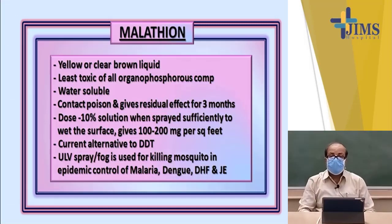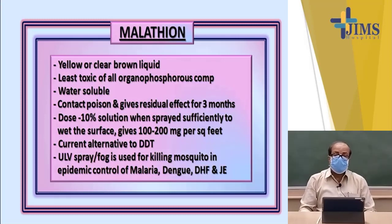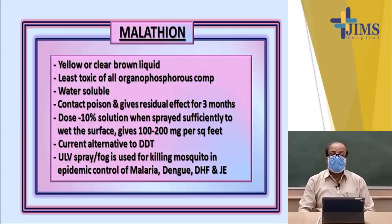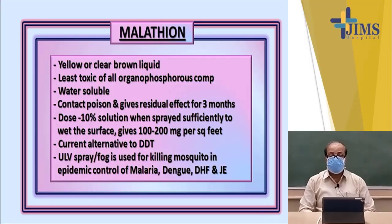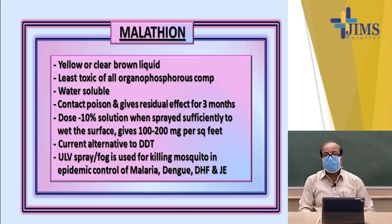Next is the organophosphorus compound malathion. It is very commonly used at present in the national malaria eradication and control program and other vector-borne disease programs. However, areas infested with dengue are subjected to deltamethrin spray. Malathion is a yellow clear brown liquid and is the least toxic of most organophosphorus compounds. However, human toxicity is quite common. In case a person gets poisoned with malathion through intentional or non-intentional ingestion, they must be treated with atropine and PAM (pralidoxime).